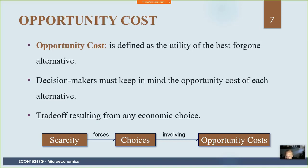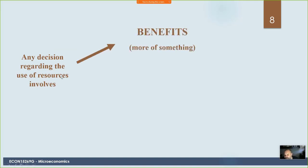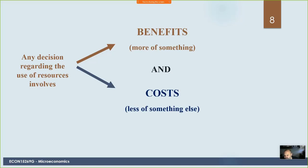Because resources are scarce, that forces us to make choices, and when we make choices that involves opportunity costs. If the government decides to spend money building an Olympic stadium, the opportunity cost is that the money could have been spent on better education or a new hospital. The resources used to build that stadium are scarce, and once you use them to build a stadium, you can't make anything else with those resources. Any decision regarding the use of resources involves benefits — we get a nice stadium and the benefits of hosting the Olympics — but we have to give up something. There's always going to be some opportunity cost.